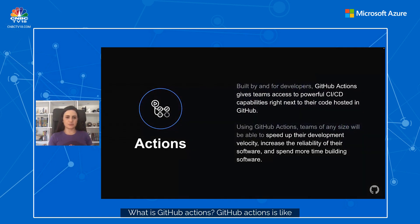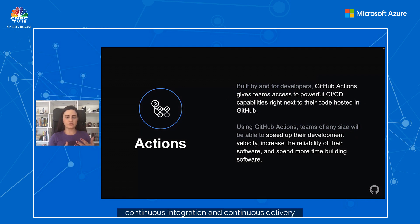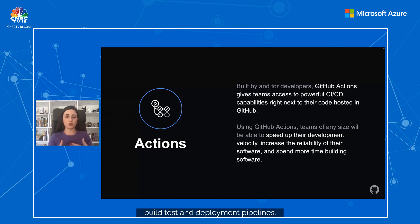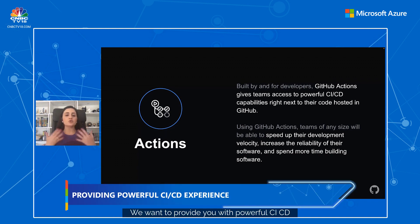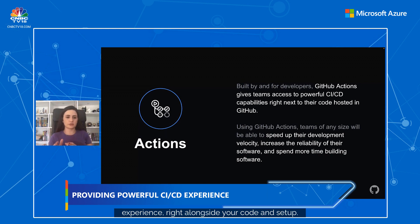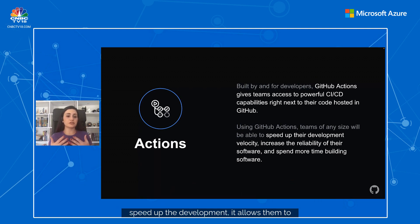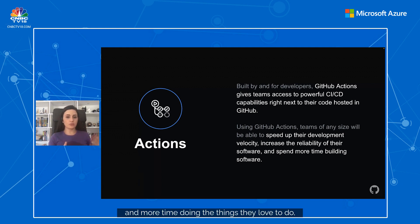What is GitHub Actions? GitHub Actions is a continuous integration and continuous delivery CI/CD platform that allows you to automate your build, test, and deployment pipelines. We want to provide you with a powerful CI/CD experience right alongside your code. Why do our customers care? Because it helps them speed up their development — spending less time doing things they don't want to do, and more time doing things they love, like innovating and writing code.